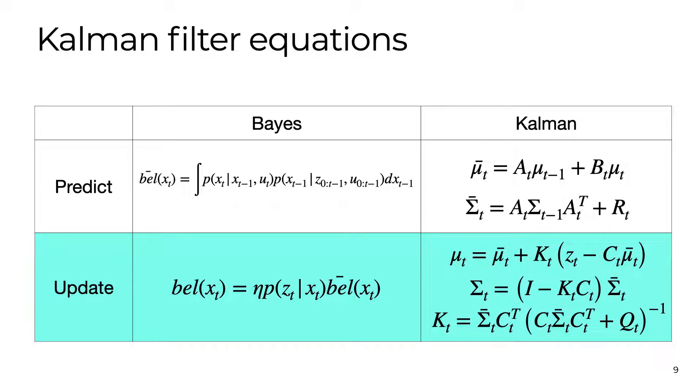In the first equation, we updated the mean as the weighted sum of our prior mean and the difference between the measurement and what our measurement model predicted that the measurement should have been based on the mean state multiplied by K. This difference is referred to as the innovation.